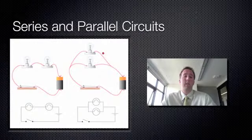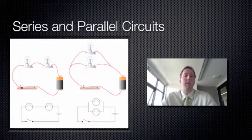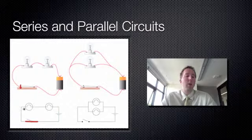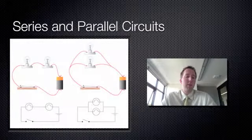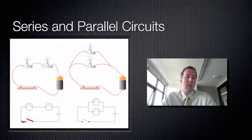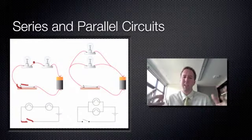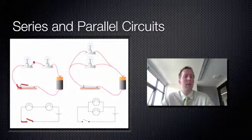Something else about series and parallel circuits: if I have a switch in this series circuit and I close this switch, then all the light globes will glow and they'll all be on. But if I open the switch and I have a gap here so electricity can't flow, then all of the light globes will turn off. So I can either have all of the light globes on or all of the light globes off, but nothing really in between.